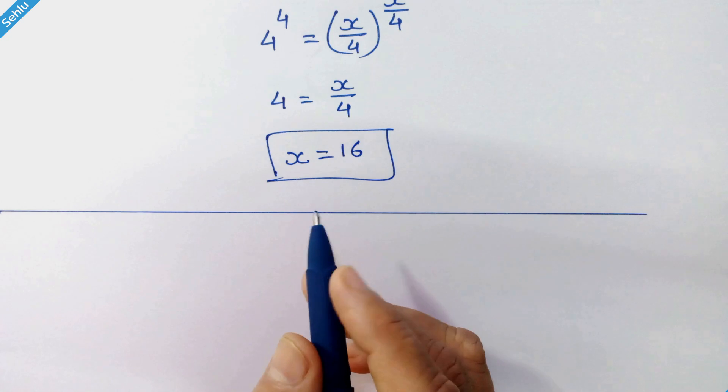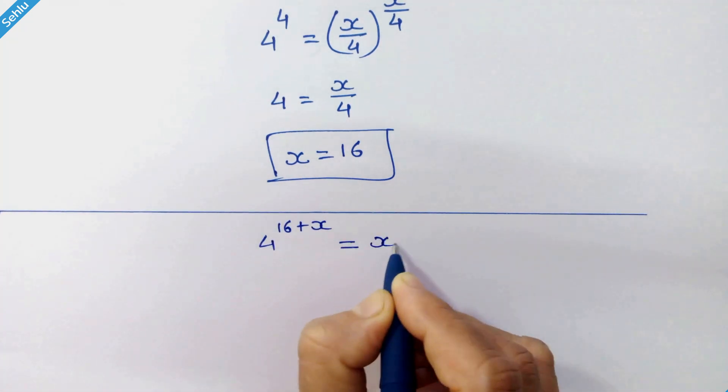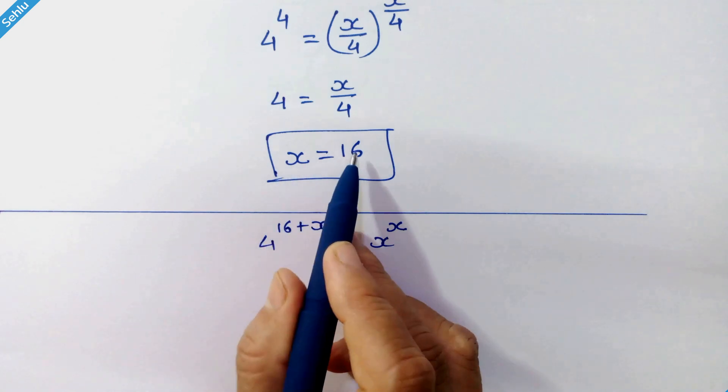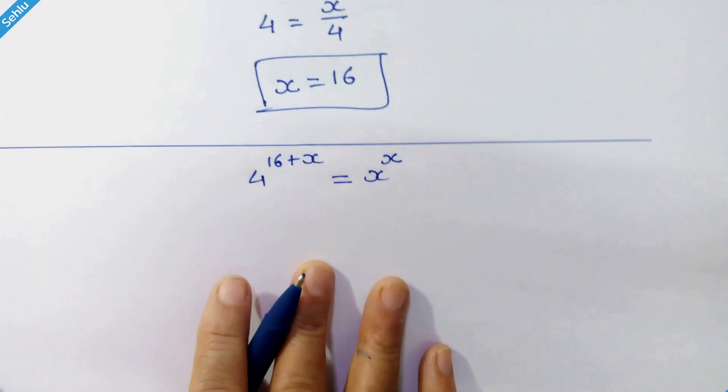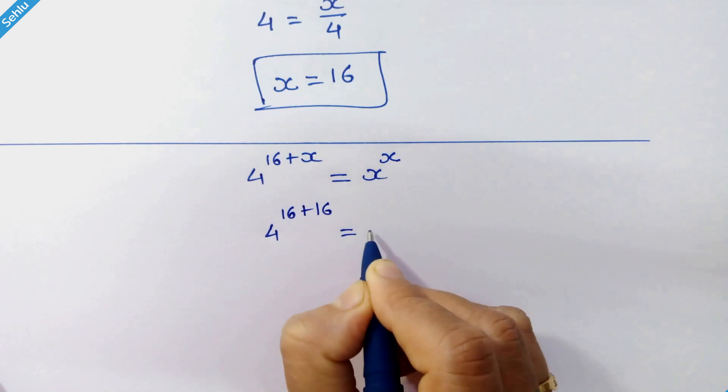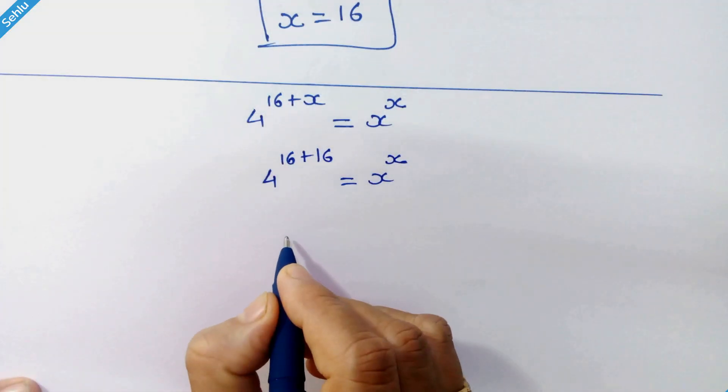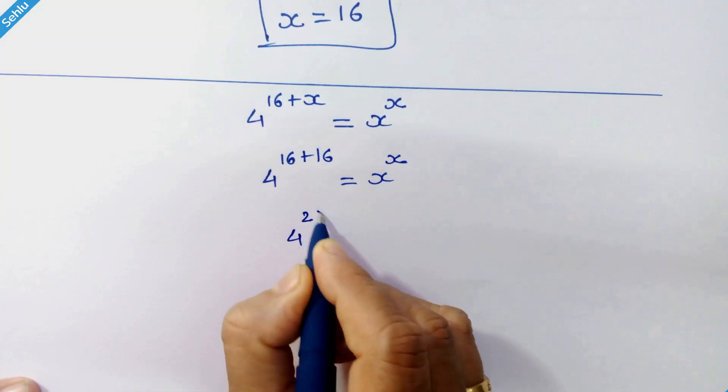Now let's check our answer. Let's put x equals 16 into the original equation. 4 raised to 16 plus 16 equals x raised to x. 16 plus 16 is 2 times 16, so we can write this as 4 raised to 2 times 16.